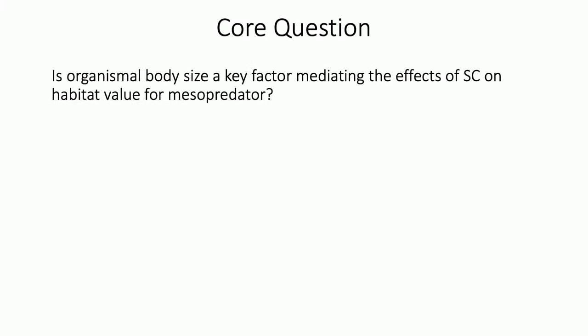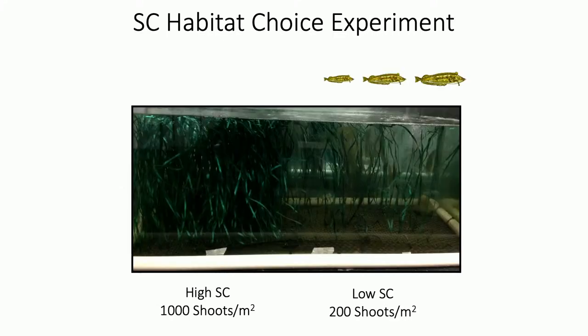This gets to the overall objective for my Master's work: to determine whether organismal body size is the key factor mediating the effects of structural complexity on habitat value for a mesopredator. We're going to go through three main experiments — first asking where these fish hang out in nature through a structural habitat selection experiment, then looking at the interactions of structural complexity and body size on predation risk, and then foraging efficiency.